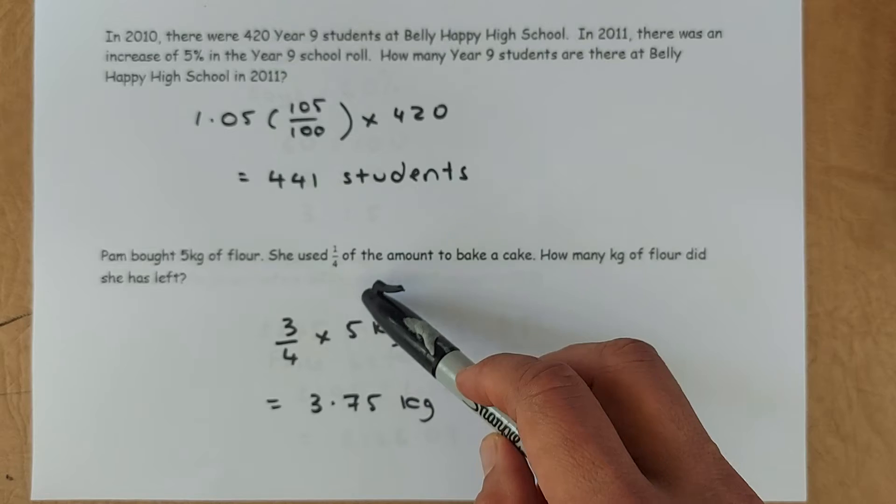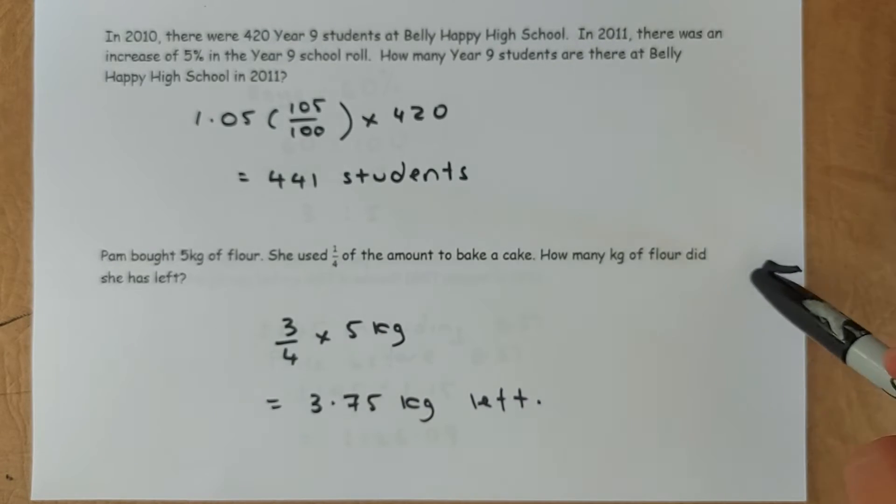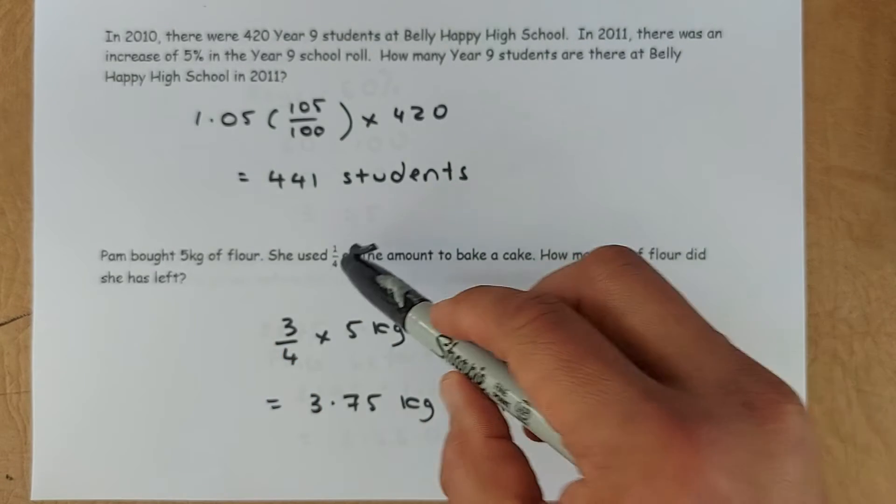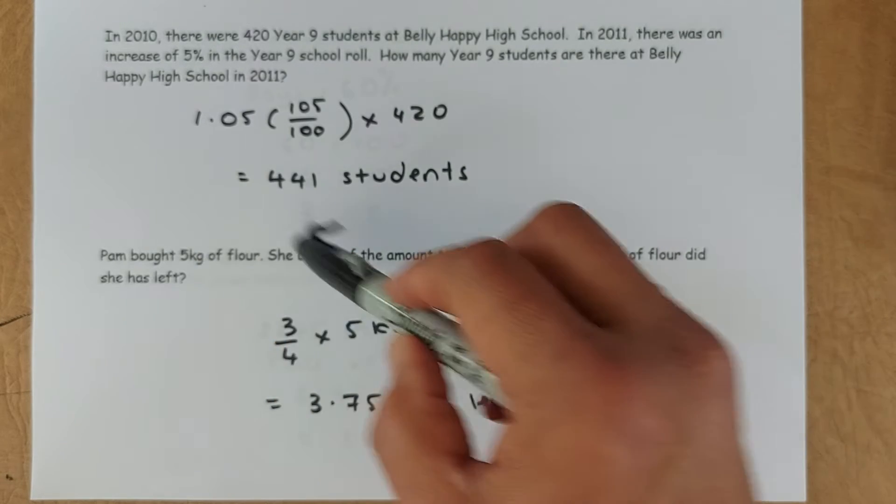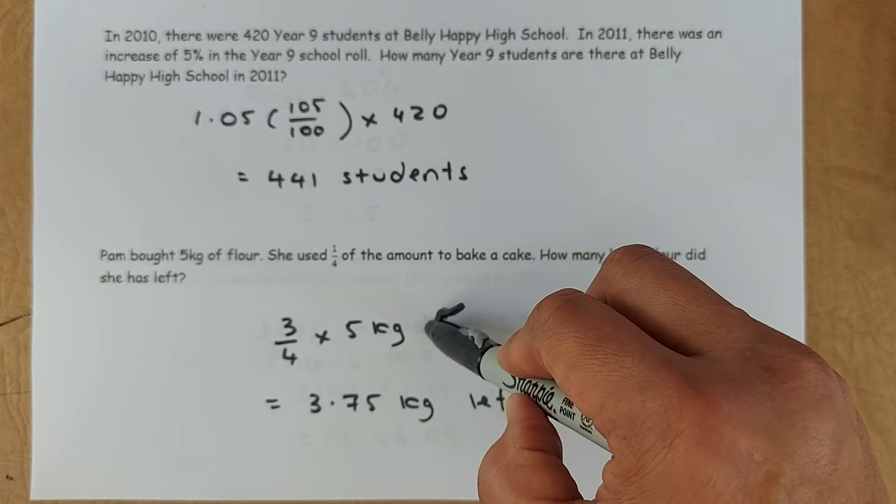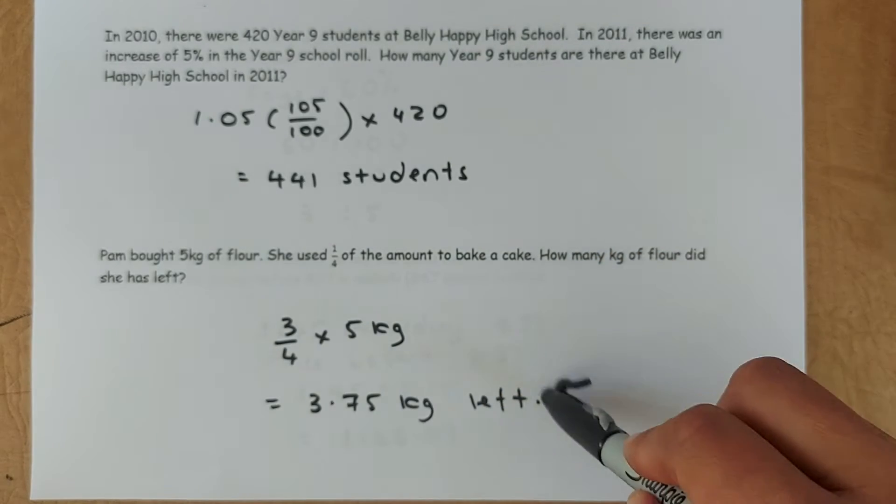Pam bought 5 kg of flour. She used 1 quarter to bake a cake. How many kg did she has left? So if she used 1 quarter, she has left with 3 quarters. So 3 quarters of 5 kg. Put in your calculator. 3 quarters times 5 kg is 3.75 kg left.